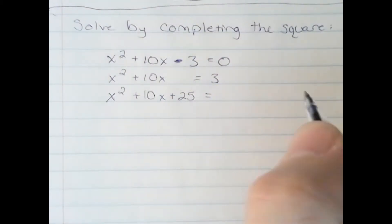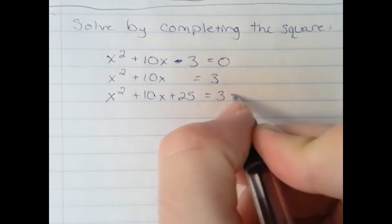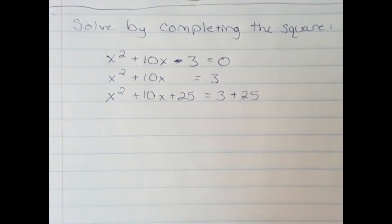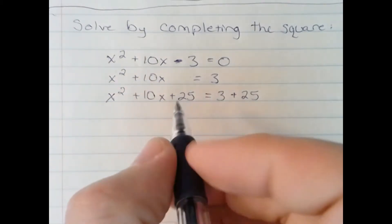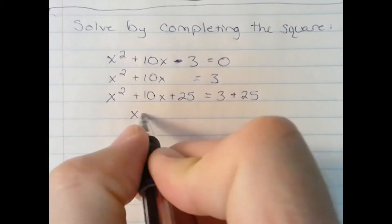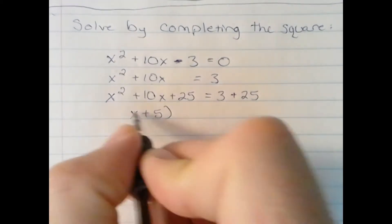But in order to keep the equation balanced, I need to add 25 to the other side as well. What this allows me to do is write this as a simple binomial squared, x plus 5 quantity squared.